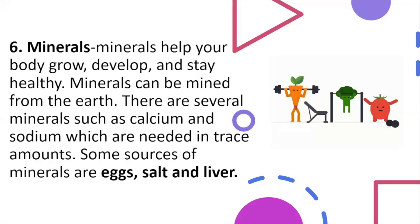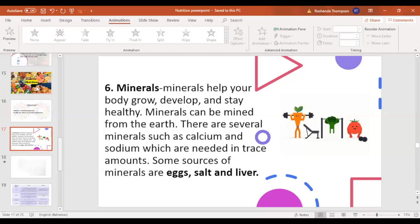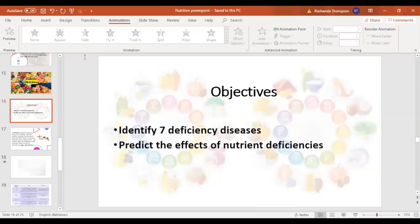Please put your questions in the Q&A and your answers in the chat. Take out your books. Today is the 23rd of April. Our topic is still nutrition, and our objectives for the day are to identify seven deficiency diseases and to be able to predict the effects of nutrient deficiencies by the end of this lesson. Please type 'done' when you are done.